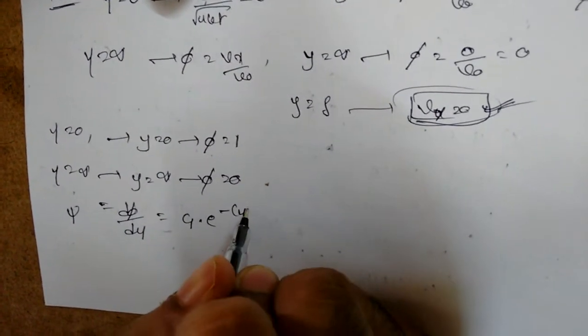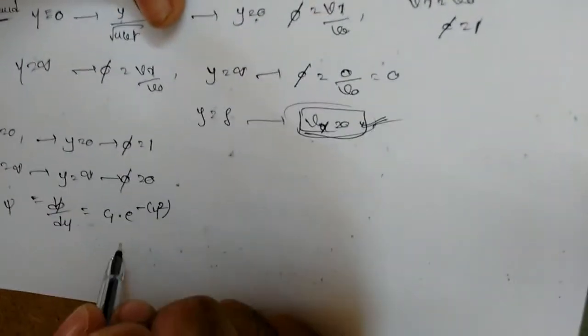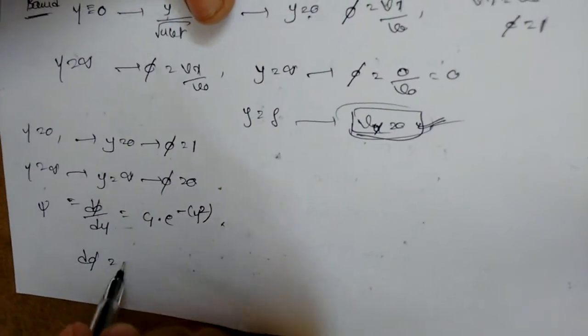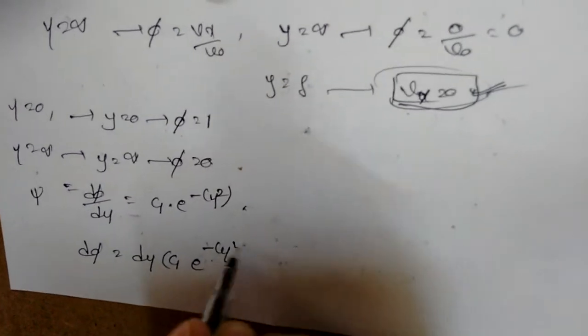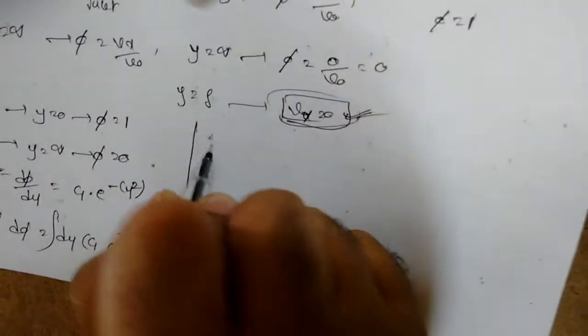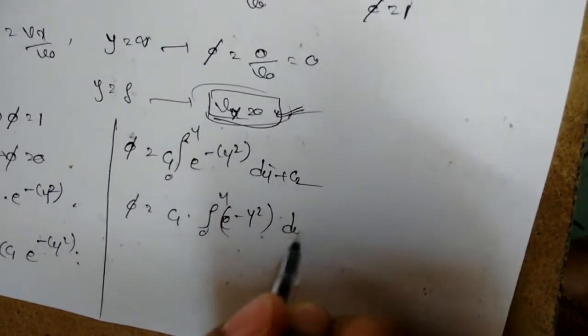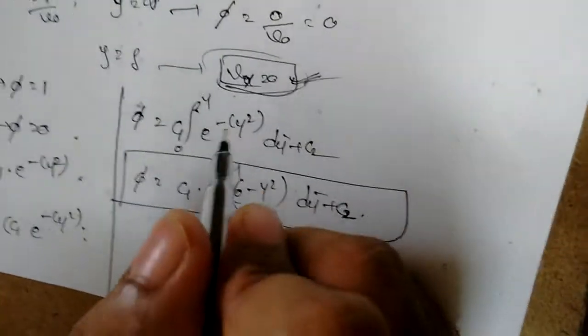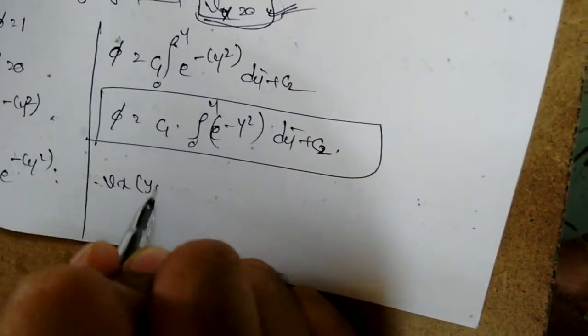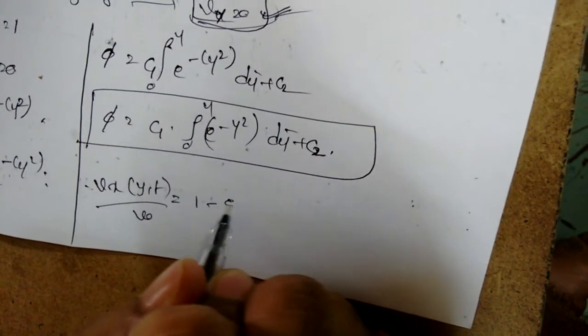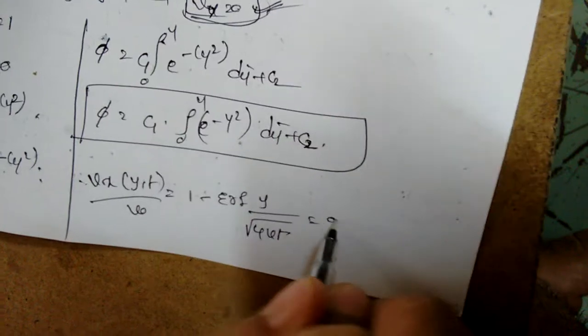Integrating the reduced equation dφ/dη = C₁ e^(−η²), we get φ = C₁ ∫₀^η e^(−η²) dη + C₂. Applying both boundary conditions yields the final result: vx(y,t)/v₀ = 1 − erf(y/√(4νt)), where erf is the error function.